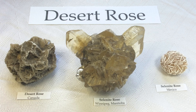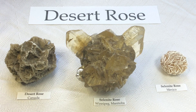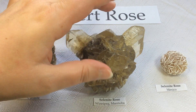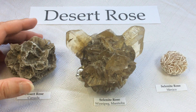Gypsum roses usually have better defined, sharper edges in their crystals, such as the couple that I have here. Barite roses tend to be a little less defined. The sizes range from about pea-sized to four inches in diameter. I'm particularly in love with this piece — it is one of my most favorite specimens.